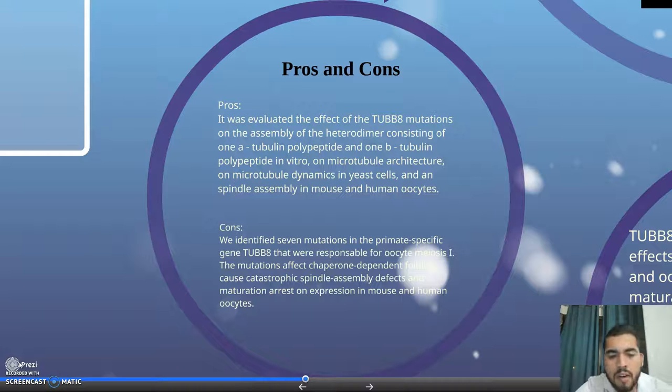We identified seven mutations in the primate-specific gene TUBB8 that were responsible for oocyte meiosis arrest. The mutations affect chaperone-dependent folding, cause catastrophic spindle assembly defects and maturation arrest, and expression in mouse and human oocytes.